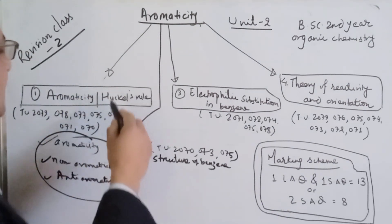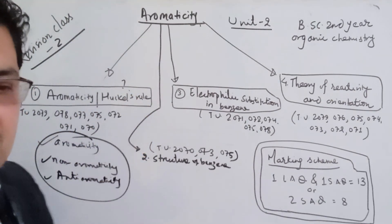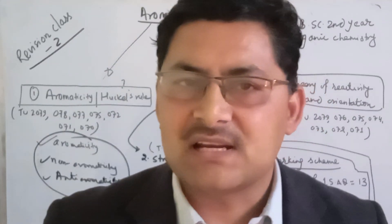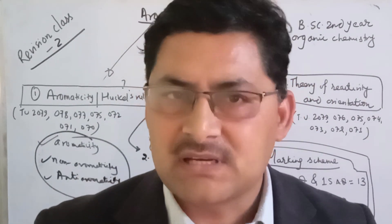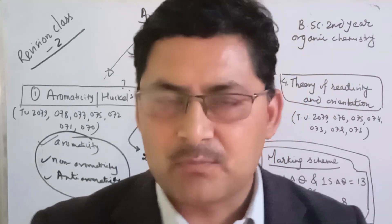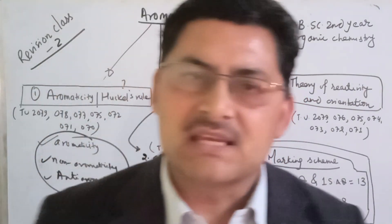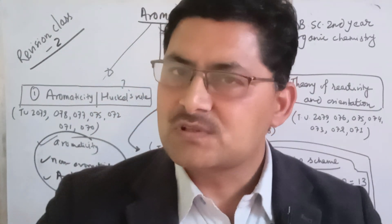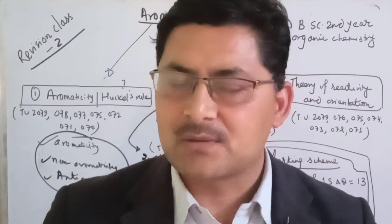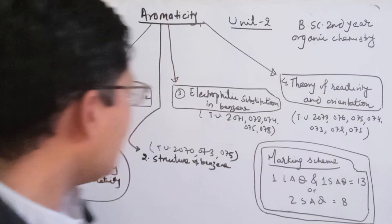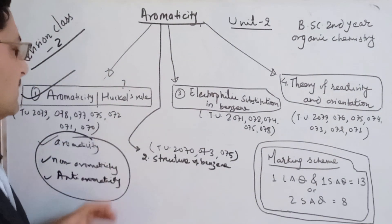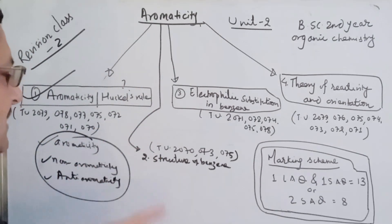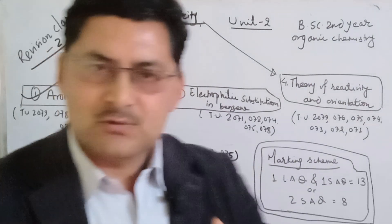There are many examples to know: tropylium, cyclopentadienyl, pyridine, azulene, benzene, and others. You can see examples of aromatic, non-aromatic, and anti-aromatic compounds from these. The most popular question is the structure of benzene, which is an amazing structure.